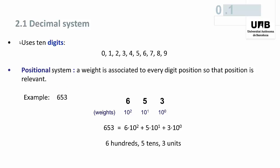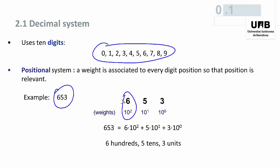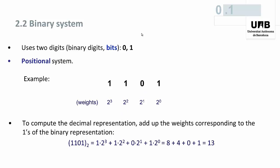The decimal system uses 10 digits — zero, one, two, and so on up to nine — and it is a positional system. That means that a weight is associated to every digit position, so that the position of the digit within the number is relevant. For example, when we write 653, what we mean is six times 10 to the power two, plus five times 10 to the power one, plus three times 10 to the power zero — six hundred, five tens, and three units.